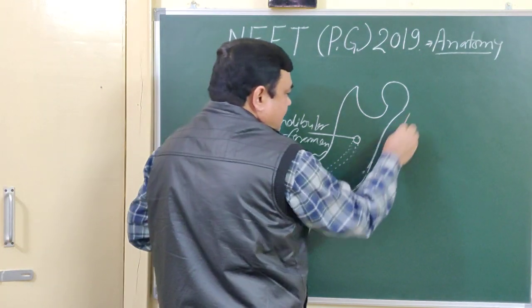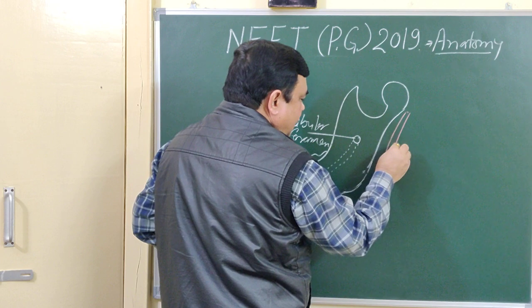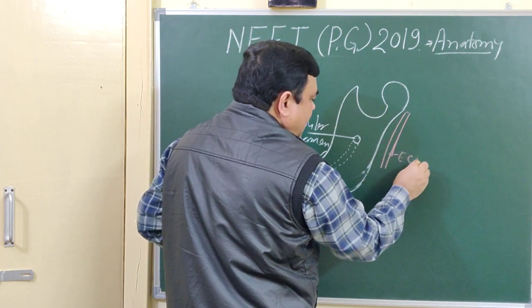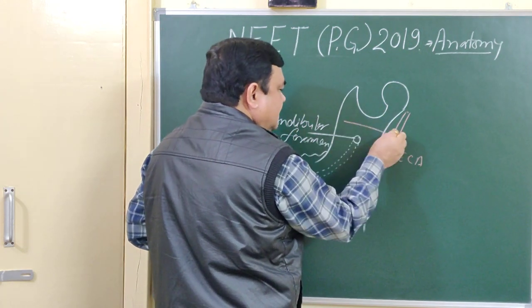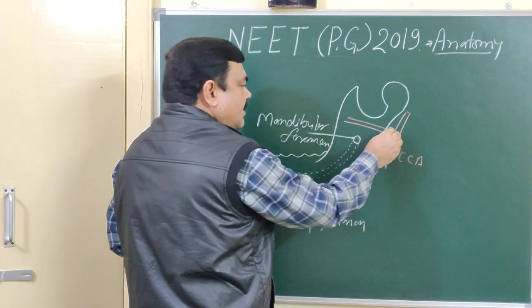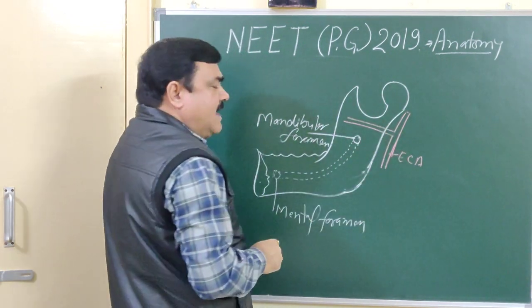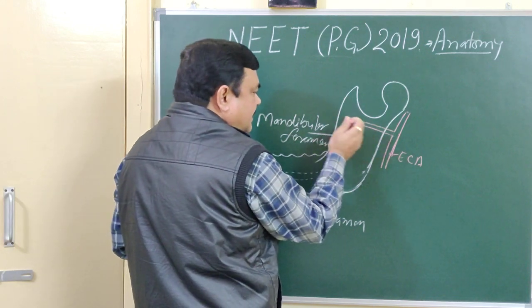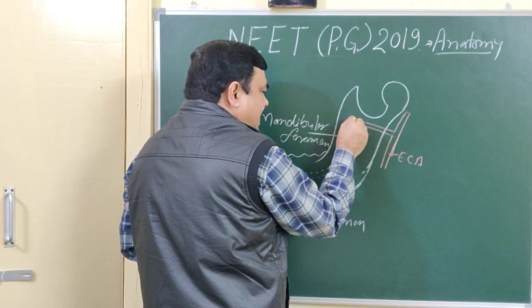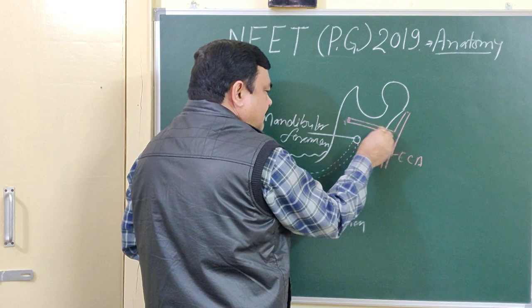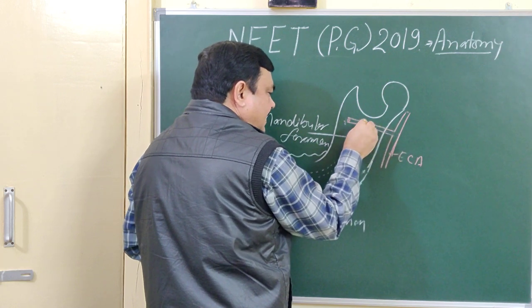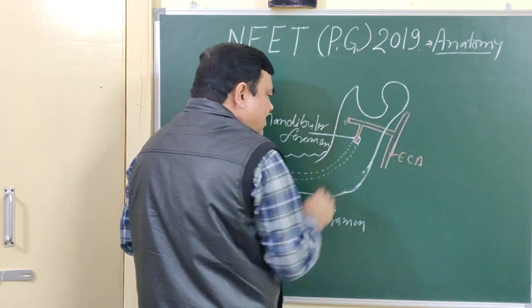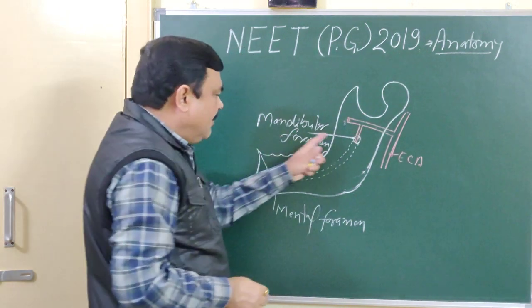Here is the external carotid artery. This is the external carotid artery; it gives a branch. This is the maxillary artery — here is the first part. This is the first part of the maxillary artery; it gives a branch — the inferior alveolar artery. This is the inferior alveolar artery. It passes through the mandibular foramen.